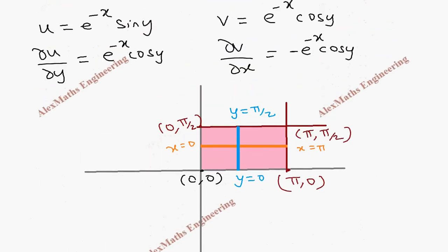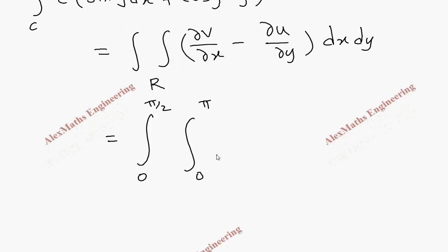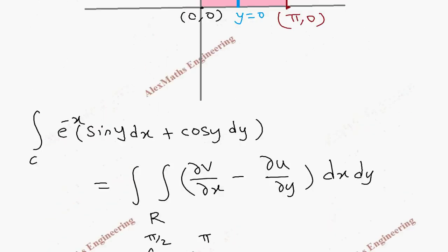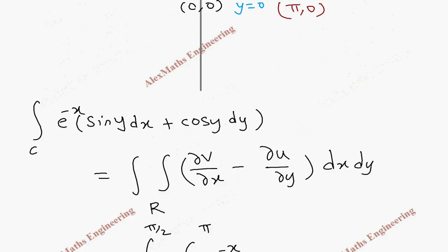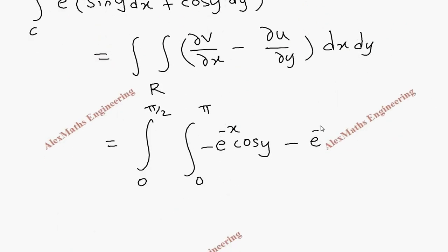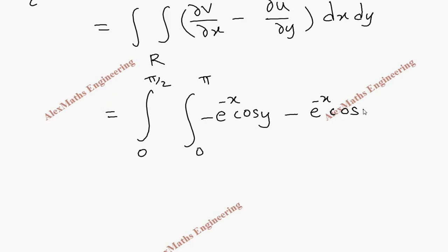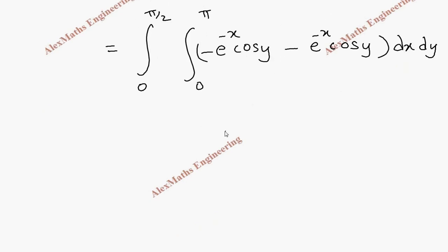∂v/∂x equals −e^(−x) cos(y), and ∂u/∂y equals e^(−x) cos(y). So ∂v/∂x − ∂u/∂y gives −e^(−x) cos(y) − e^(−x) cos(y). Since both terms are like terms, this simplifies to −2e^(−x) cos(y), and at the end we have dx dy.